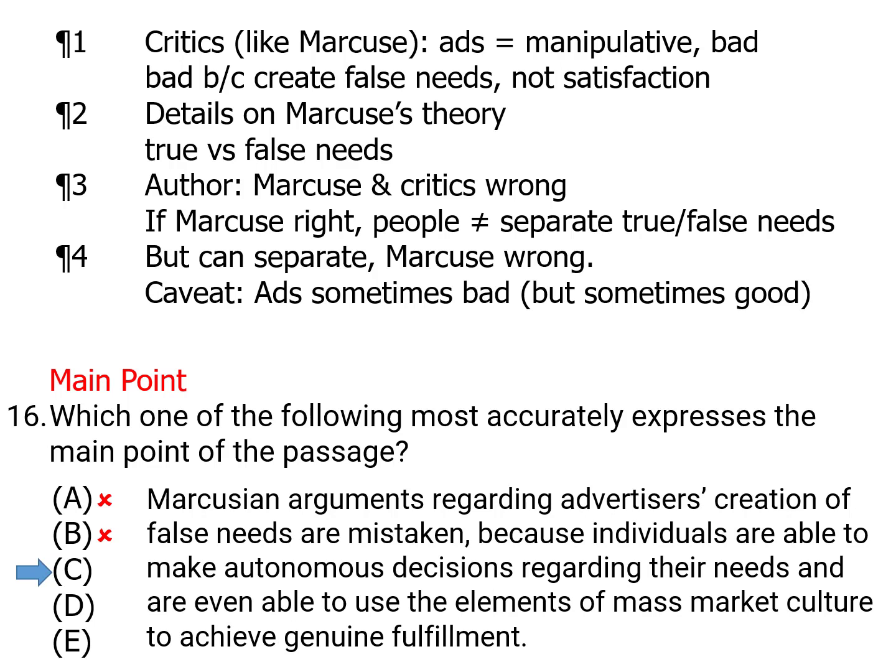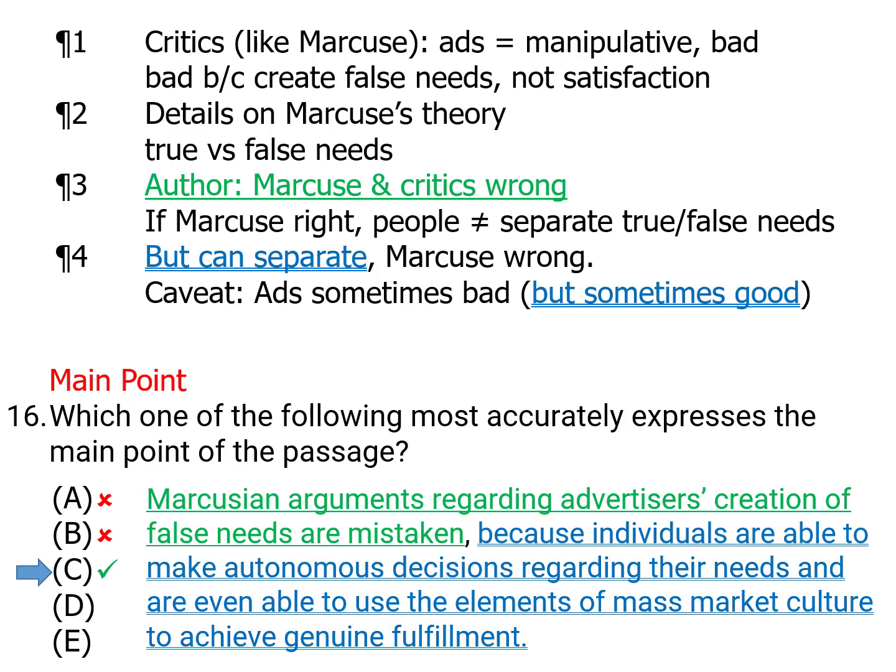Answer choice C — this is what we want. The first half clearly states that Mark Hughes is wrong. And then the second half gets right why the author says that: because we can make decisions regarding our needs — that is, we can separate true and false needs. And sometimes we can actually fulfill our needs with advertisements; sometimes they are good. So C is what we wanted.